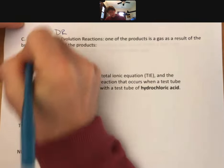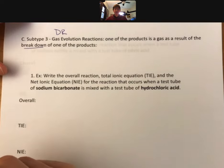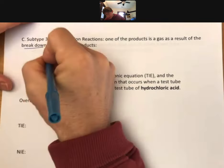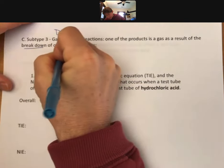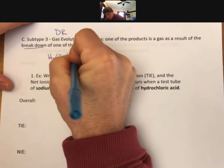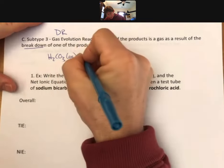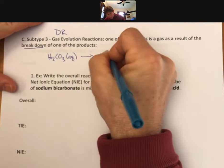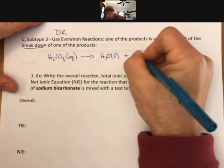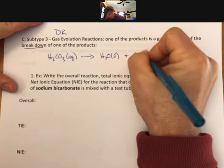Let's show you what we mean by that. Specifically, the breakdown of one of the products—that product is going to be carbonic acid, H2CO3. And if you make carbonic acid in a reaction, it spontaneously breaks down into H2O liquid plus CO2 gas.